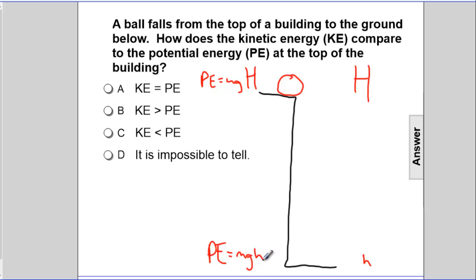Now, small heights give small PEs. Large heights give large PEs. So let's just define, up top, it has a large PE. And down here, it has a small PE.